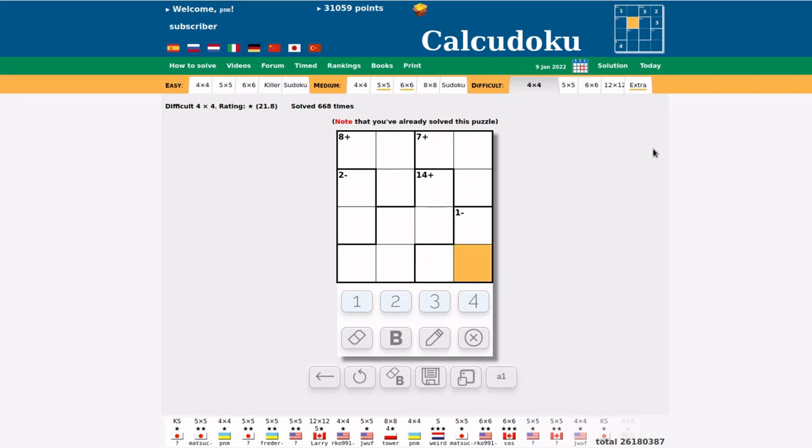So now let's assume it is this one. Now look at this 7-plus here. 7-plus is either 3 plus 1 plus 3, doesn't work...